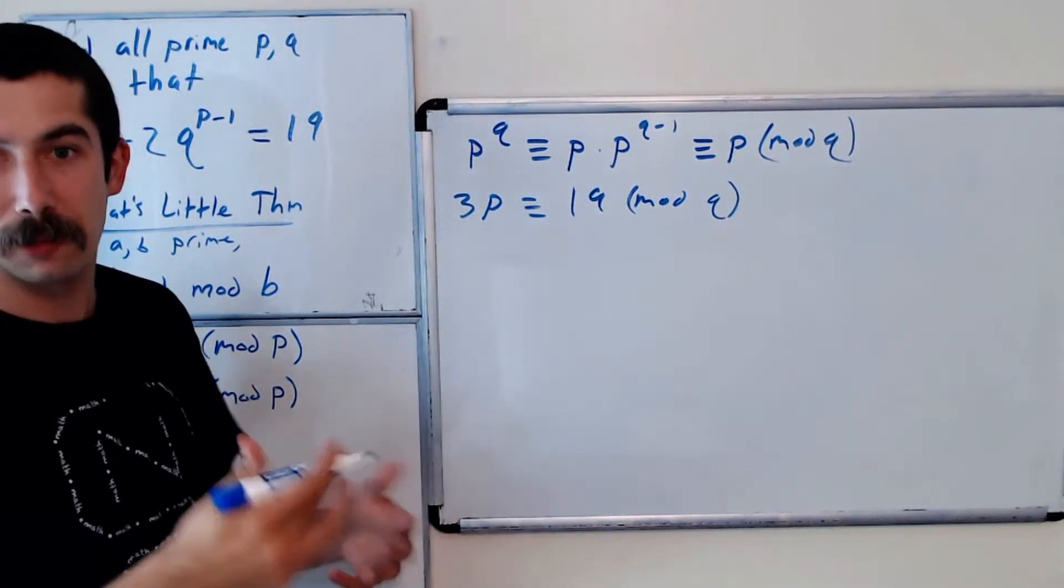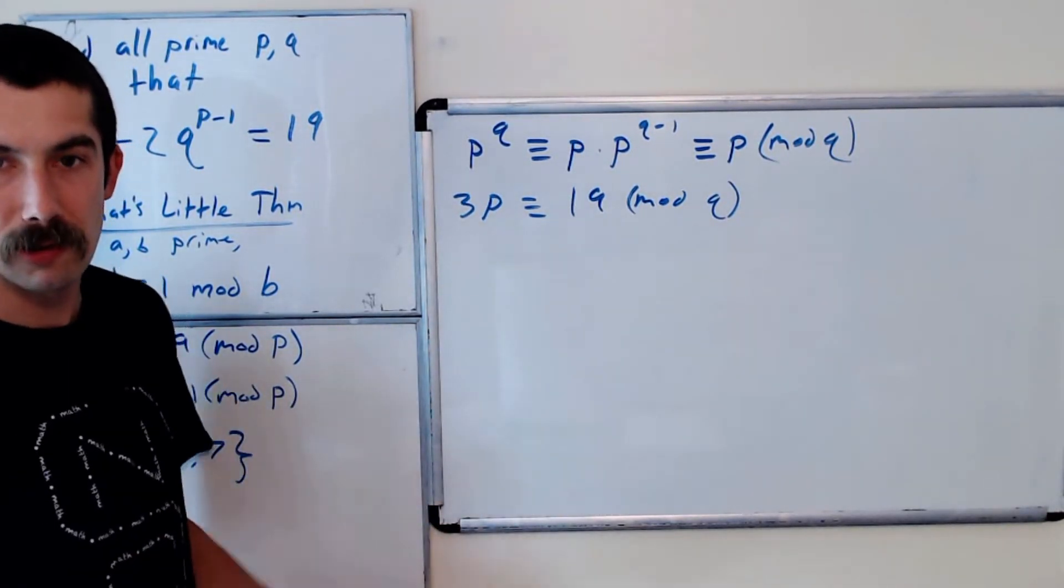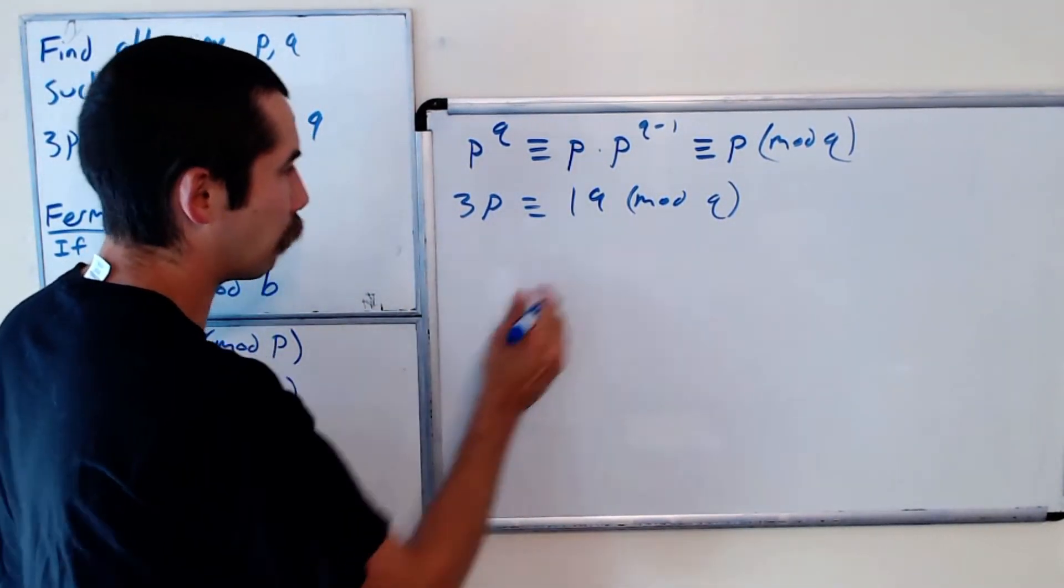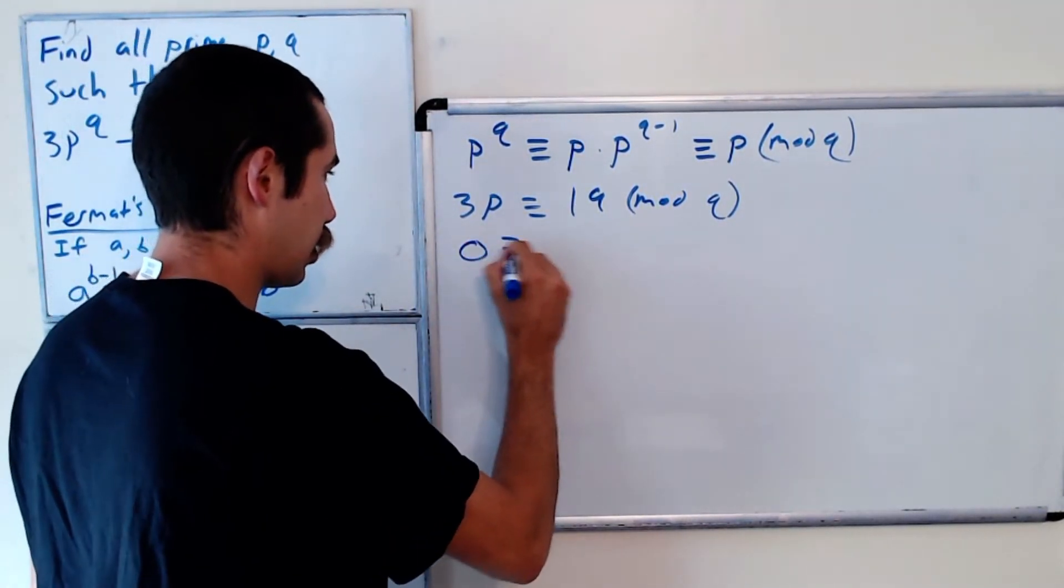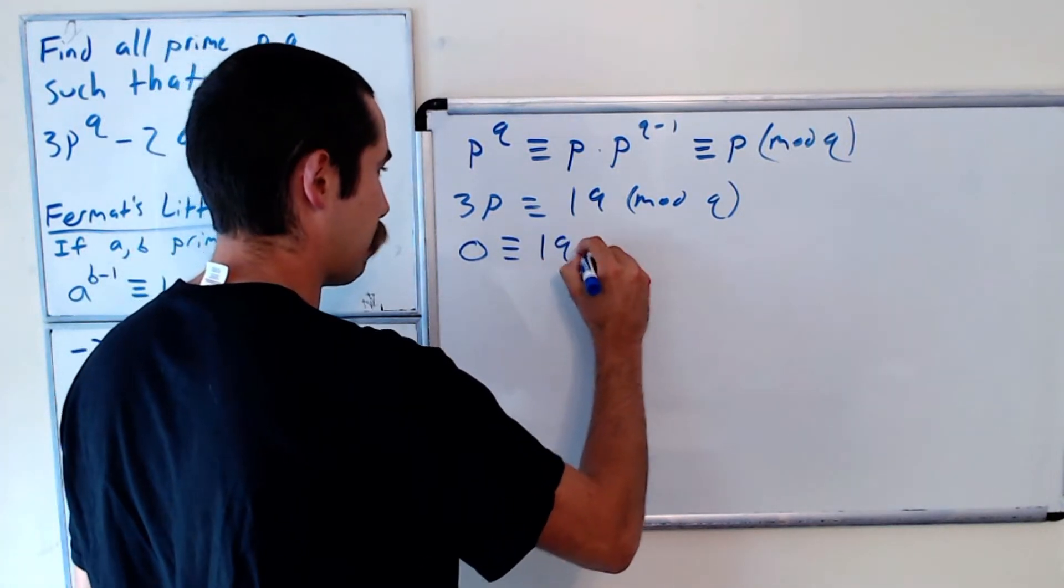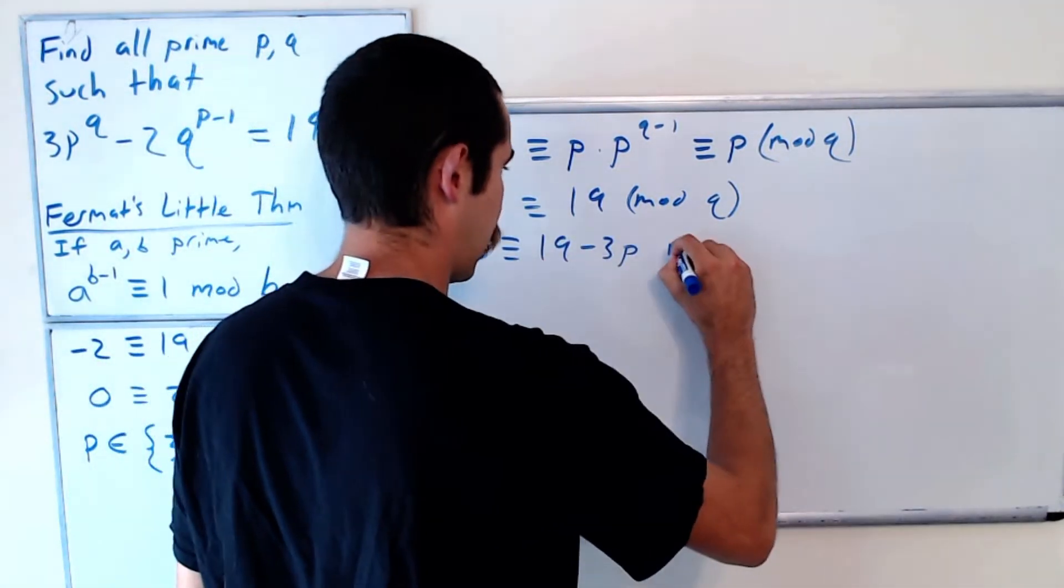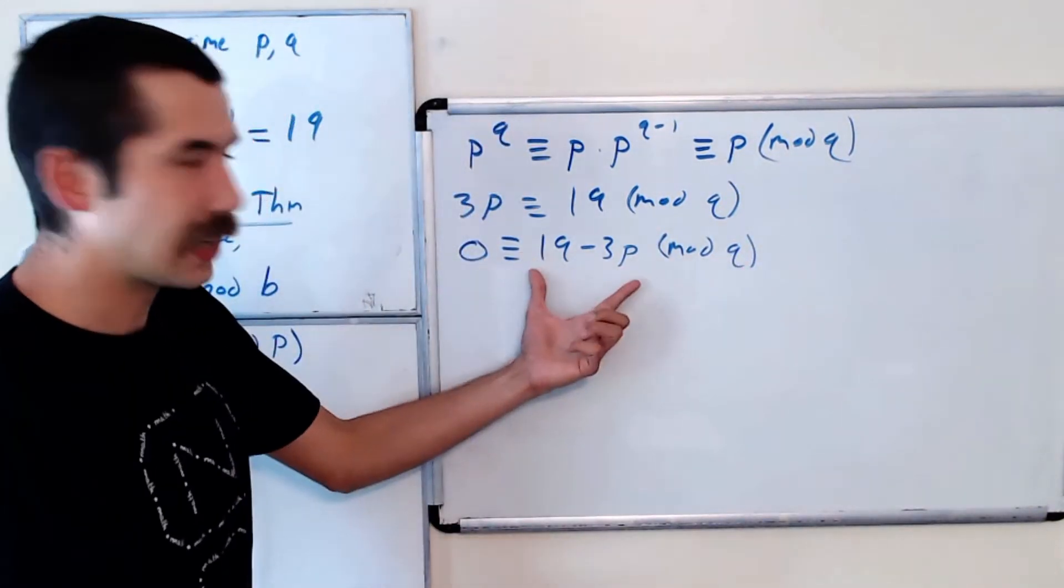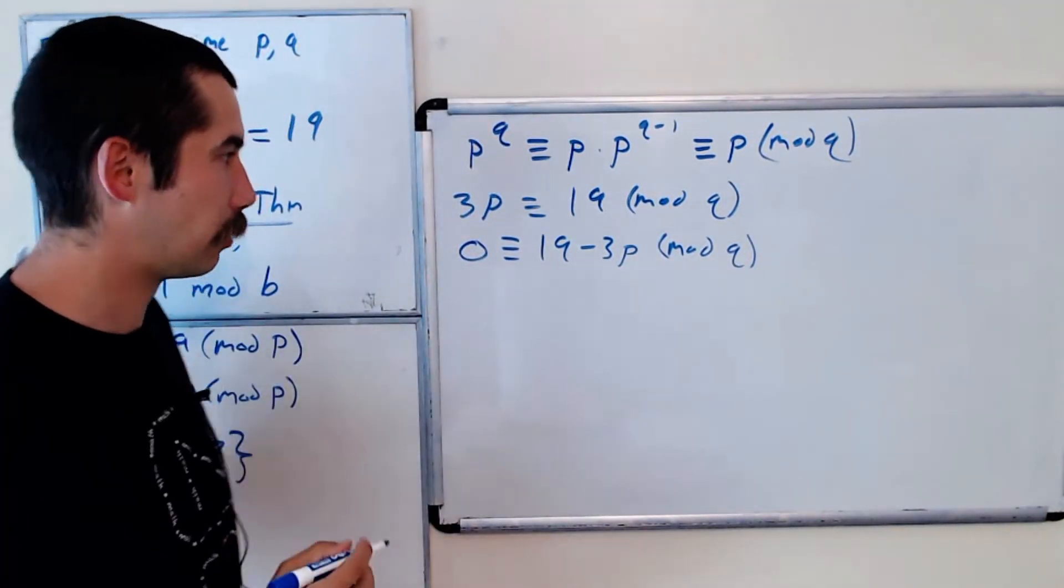And we already know that p is either 3 or 7, so let's consider both of those options. Actually, before we do that, let's bring everything to one side. So 0 is equal to 19 - 3p mod q. That's to say that 19 - 3p is divisible by q.